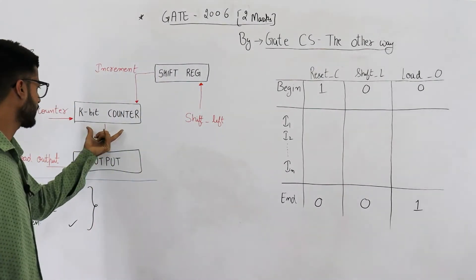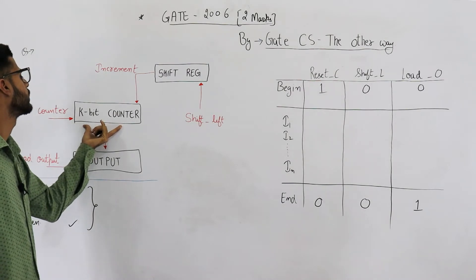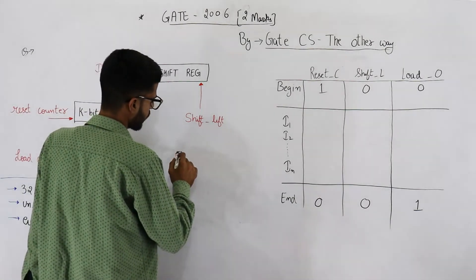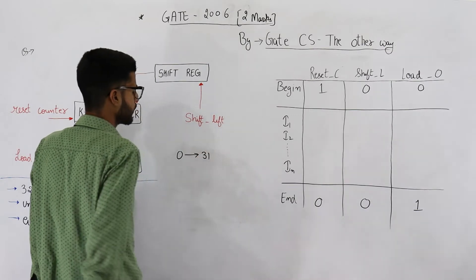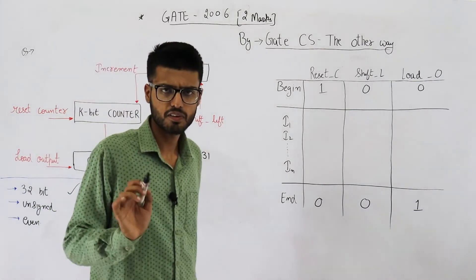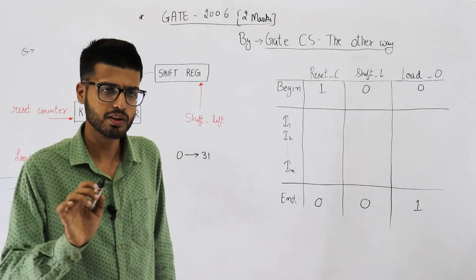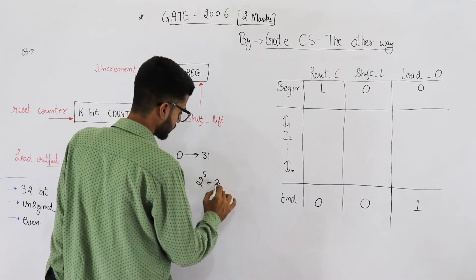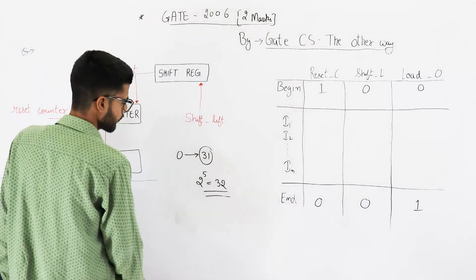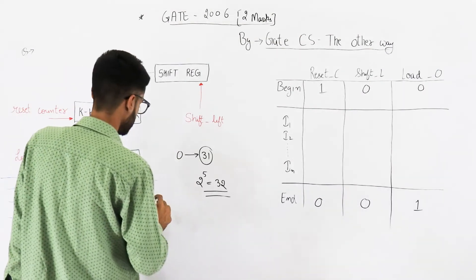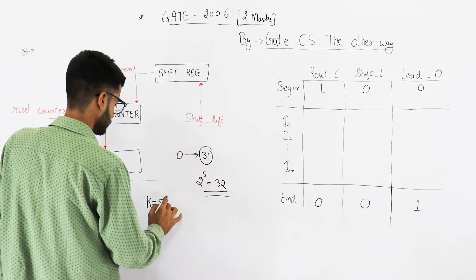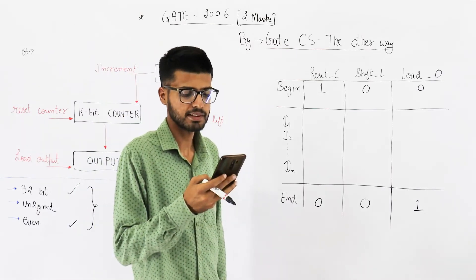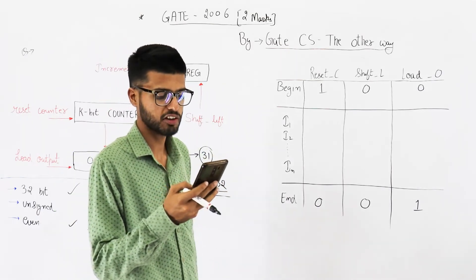Now there's a k-bit counter and we need to find the value of k. You need to count from 0 to 31, so you need a 5-bit counter, since a 5-bit counter can distinguish between 32 different combinations — 2 raised to the power 5 is 32. So the value of k is 5. This lets us reject option A, which says 32, 5, 0, 1, 0.